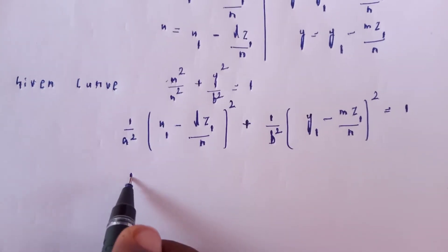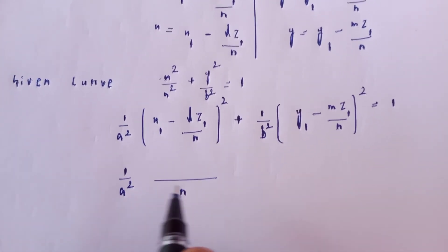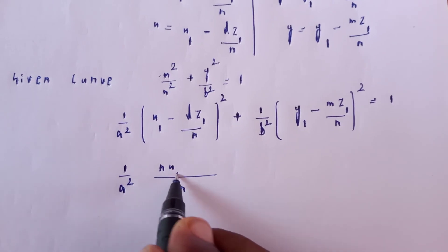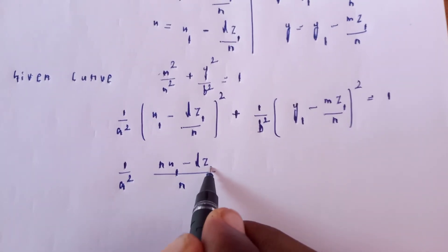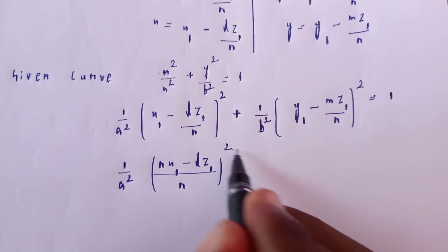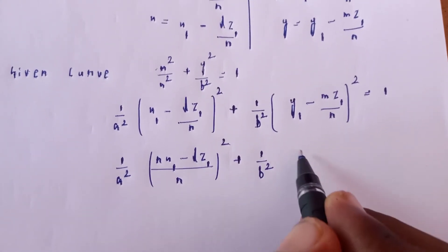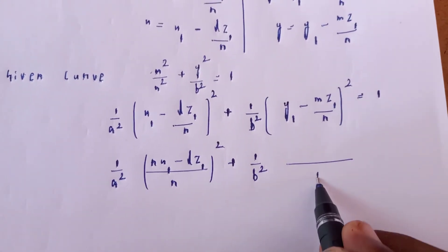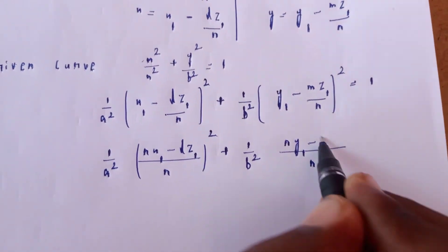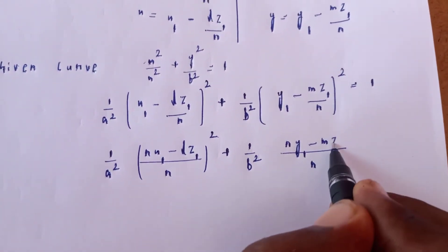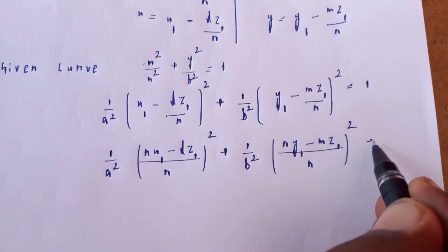Rewriting with a common denominator n: (nx1 minus lz1) by n whole square times 1 by a squared, plus (ny1 minus mz1) by n whole square times 1 by b squared, equal to 1.